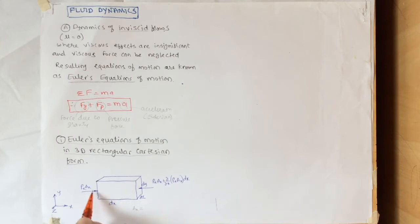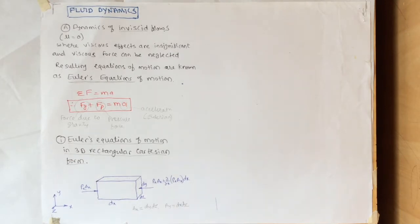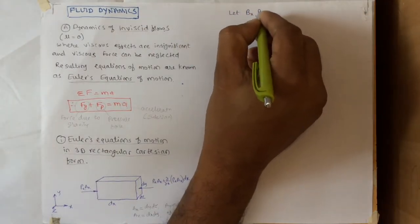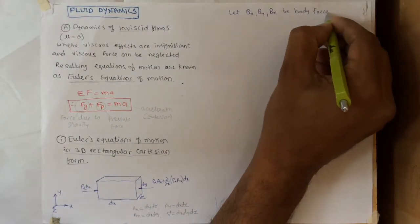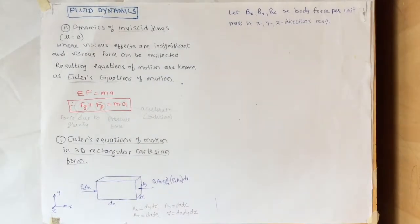The area Ax, through which flow is flowing in the x-direction, is given as dy·dz. Ay is the area dx·dz, and Az, the area through which flow in the z-direction flows, is dx·dy. The volume of the element is dx·dy·dz. Let bx, by, and bz be the body force per unit mass in the x, y, and z directions respectively. Body forces include gravity forces, electromagnetic forces — every force which acts on the whole body.